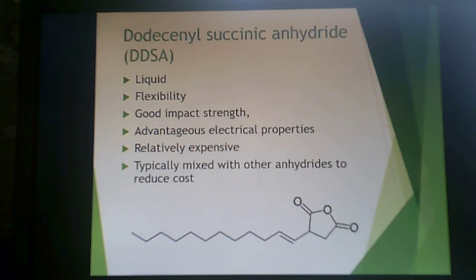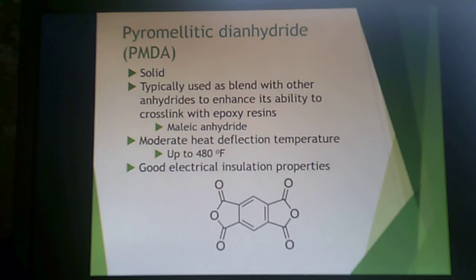Dodecyl succinic anhydride (DDSA) is a liquid that provides good impact strength and flexibility in the resulting resin, along with advantageous electrical properties. It is relatively expensive, so it's typically mixed with other less expensive anhydrides to reduce cost. Pyromellitic dianhydride (PMDA) is a solid that typically uses a blend with other anhydrides — usually maleic anhydride, being inexpensive — to enhance its ability to cross-link with epoxy resins.